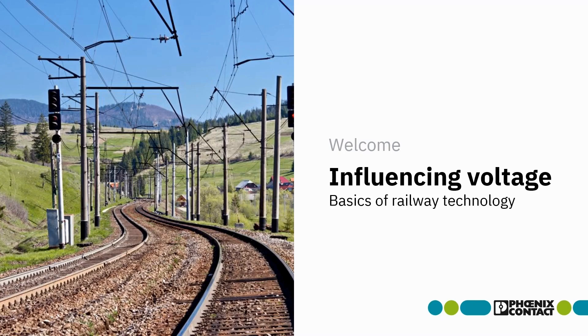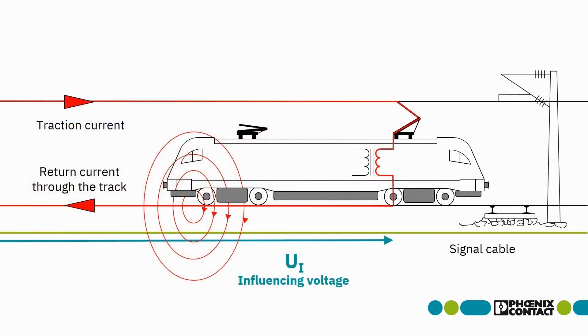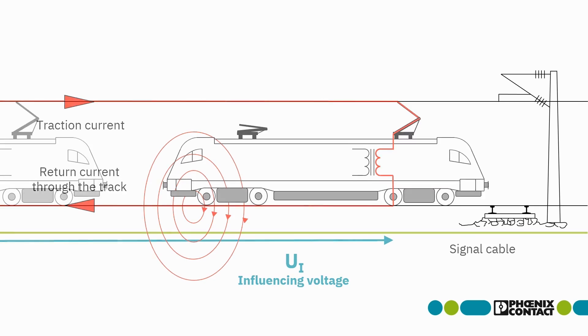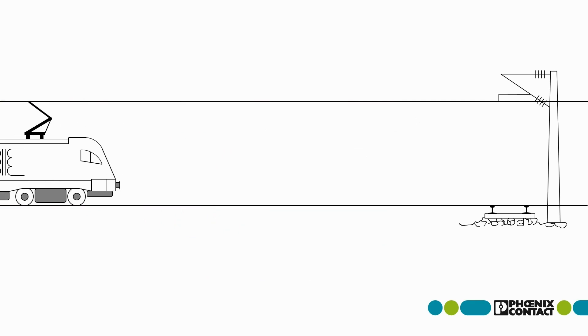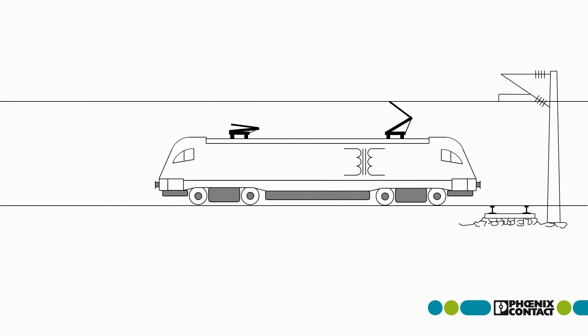Influencing voltage is a voltage induced by cables laid next to the track. It will now be explained step by step.